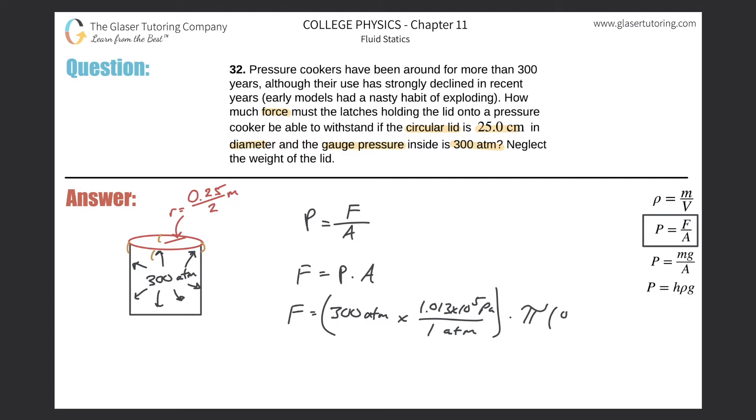So the radius here, we got 0.25 over two, square that. And now we can just throw this on into the calculator and we can get our funny result. So 300 times 1.013 times 10 to the five times pi times, parenthesis 0.25 over two squared.